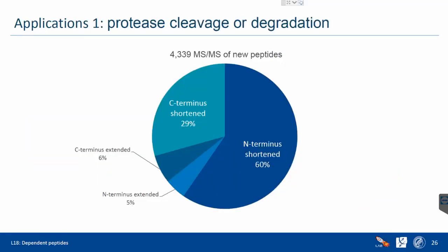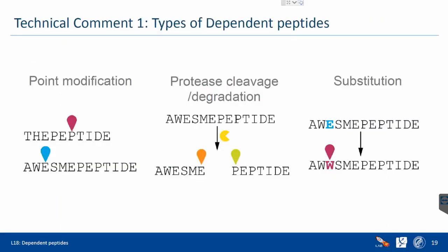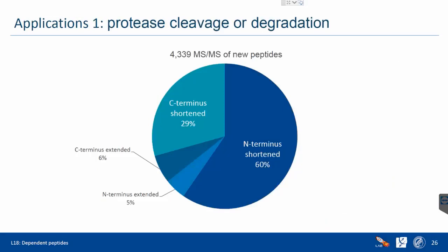Dependent peptide search can also find protease cleavage events — unconventional cleavage or peptide and protein degradation. These show up as peptides with strange N-terminus or C-terminus modifications and mostly come from unconventional behavior of the protease. It's actually a really good quality control check for your protease.